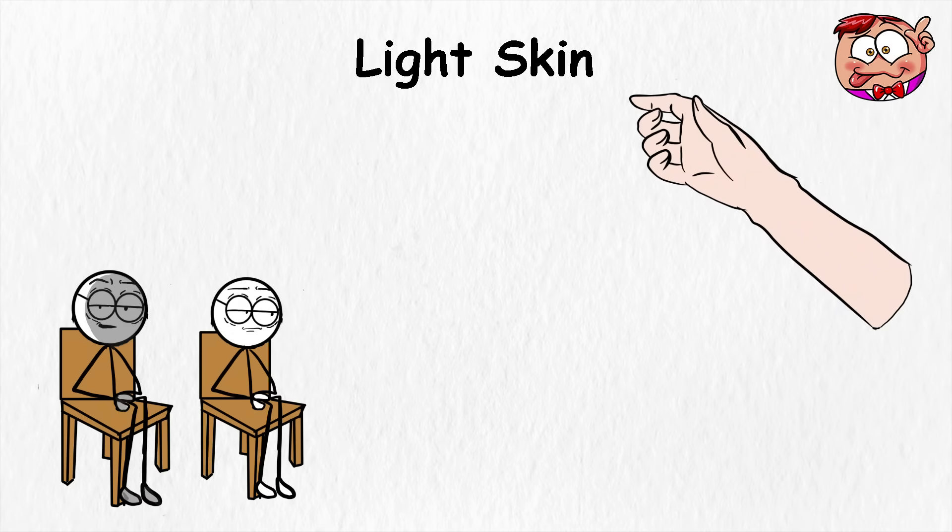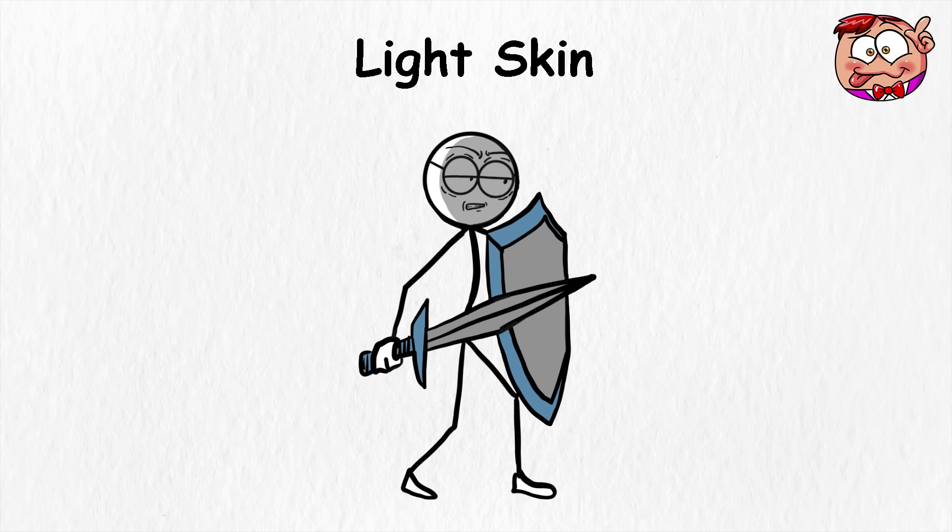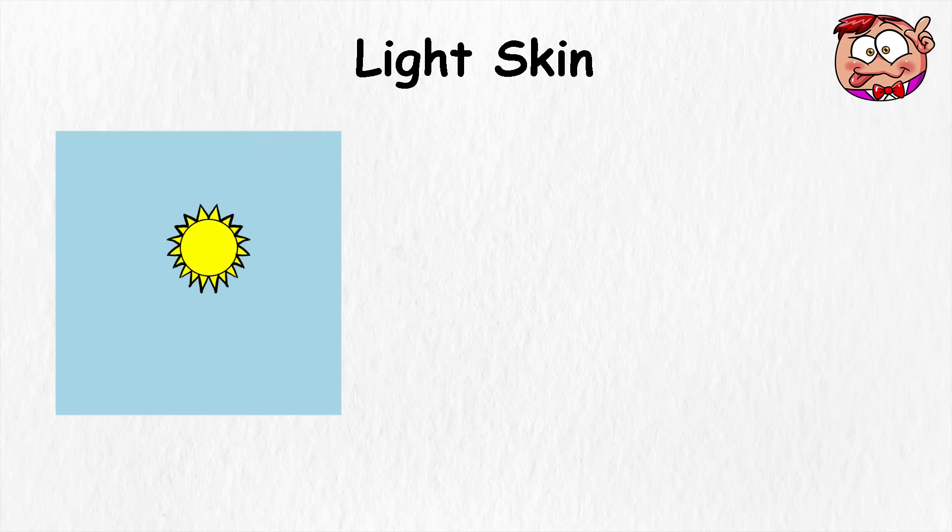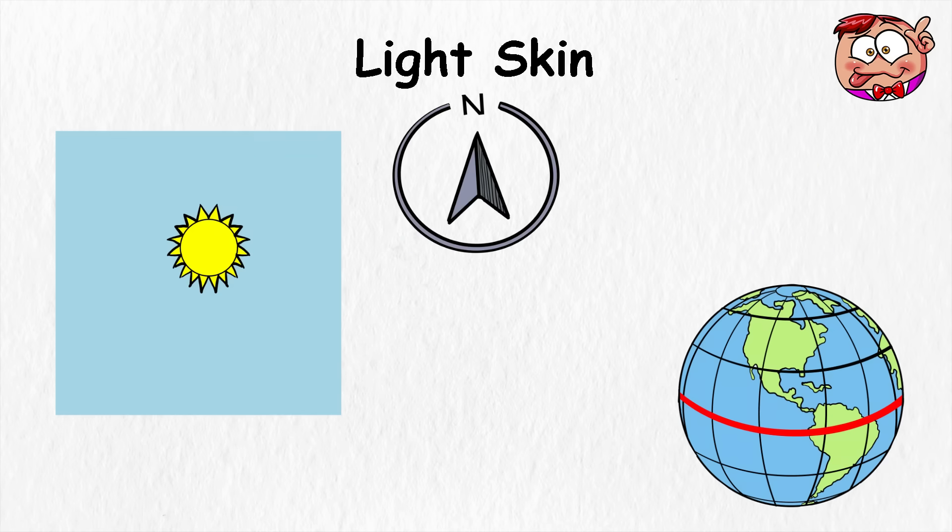Light skin. Light skin sits just a step darker than the palest tones, with a little more built-in protection from the sun. You see it a lot in southern Europe, Central Asia, and parts of North America, where the sunlight is stronger than up north, but not as harsh as near the equator.